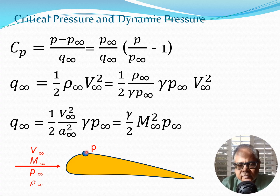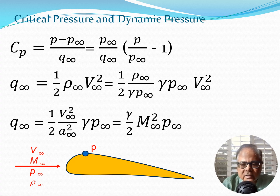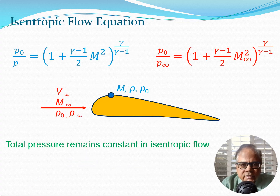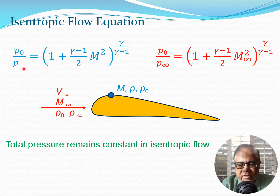To recapitulate the nomenclature: we have an airfoil cross section with a general point on the surface where pressure is P. In the free stream, pressure is P_∞, density is ρ_∞, Mach number is M_∞, and velocity is V_∞. Turning now to the isentropic flow relations, at a point on the top surface with Mach number M, pressure P, and total pressure P₀, we can write the isentropic relation: P₀/P = (1 + (γ−1)/2 · M²)^(γ/(γ−1)).